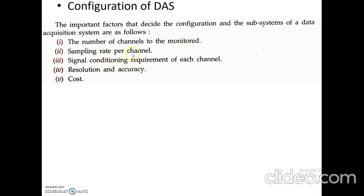The second factor is the sampling rate per channel. In the case of an analog-to-digital converter, the analog signal is sampled into discrete signals and then converted into digital form. Therefore, the sampling rate per channel is very important. The third factor is the signal conditioning requirement of each channel, as each channel requires a signal conditioning stage. The fourth and fifth factors are resolution and accuracy, and cost.